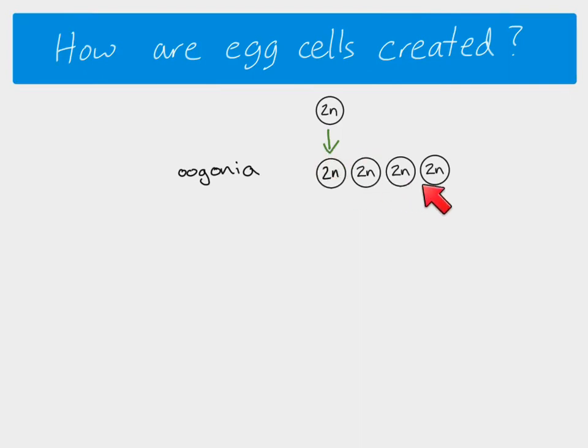So this is taking place in the ovaries, but whereas in the sperm, this process would take place once puberty has started, in females, this process begins before the female has even been born. So this process here happens in the embryo itself. Those oogonia then divide again by mitosis, and we end up with our primary oocytes. Again, still in the embryo.